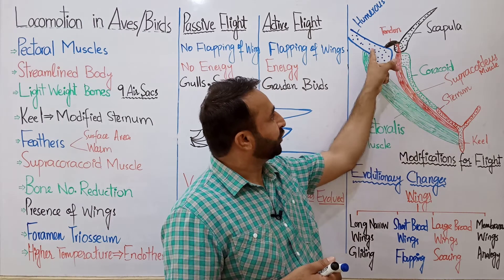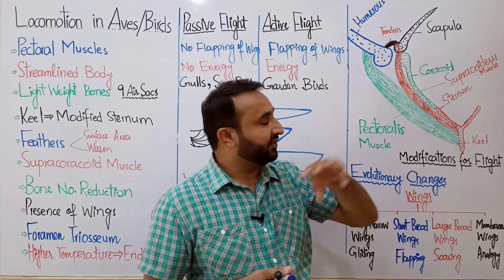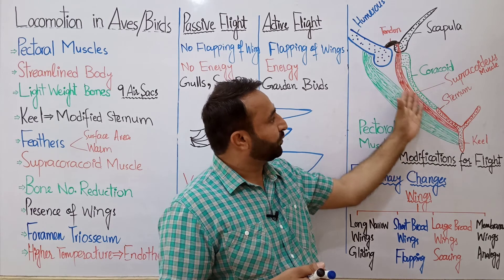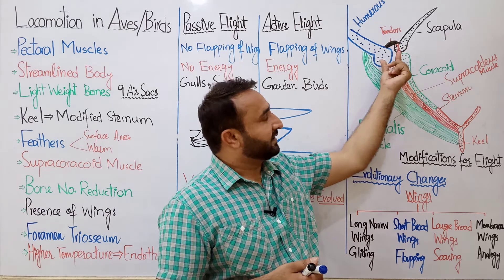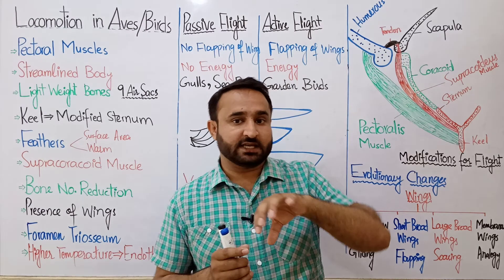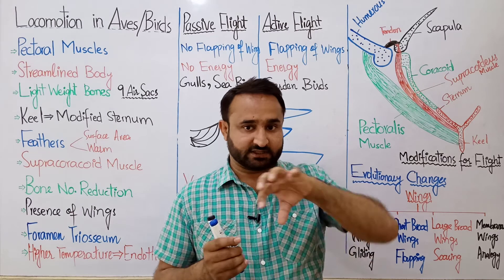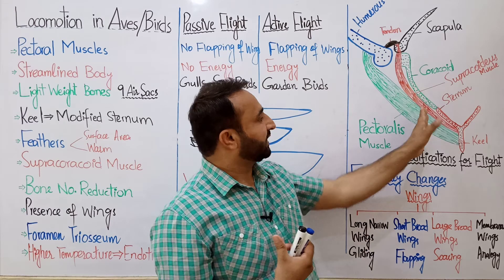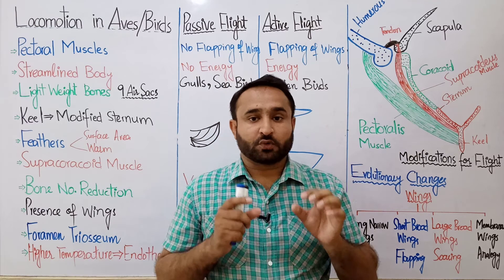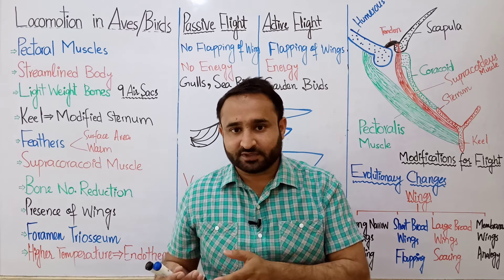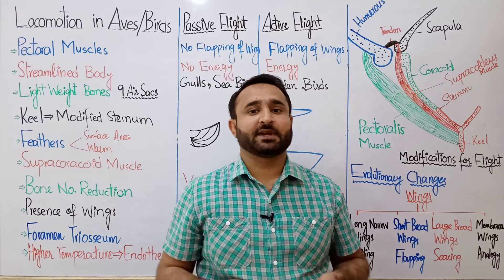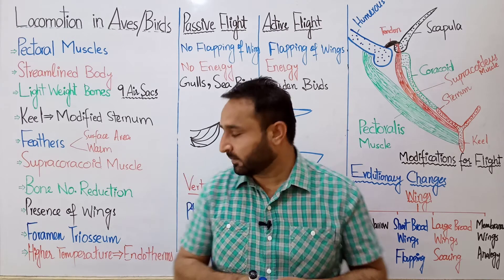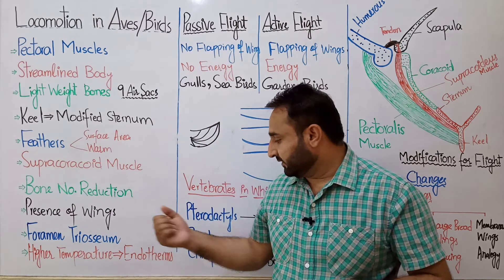Foramen triosseum — ये तीन bones हैं: coracoid, humerus, और scapula। जैसे किसी pulley के ऊपर से धागा गुज़ारके load बाँधा जाए तो वो load को आसानी से उठा लेता है — उसी तरह से यह supra-coracoideus muscle, foramen triosseum की वजए से upward stroke — यानि परों को ऊपर उठाने में आसानी से काम करता है और उसे ज्यादा load बर्दाश्त नहीं करना पड़ता।